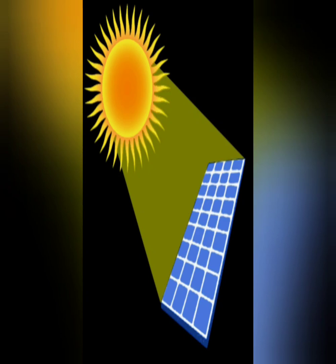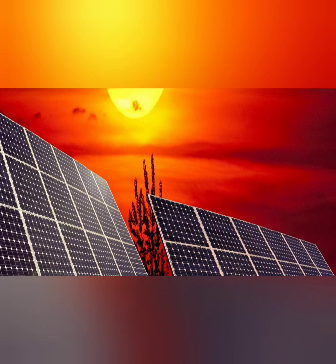Solar energy is the most abundant source of energy available on land. It does not belong to anybody, so it is free. It is also the most important non-conventional source of energy because it is non-polluting. When we hang out clothes to dry in the sun, we use the energy of the sun. Solar panels absorb the energy of the sun to provide heat for cooking and for heating water.